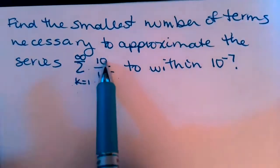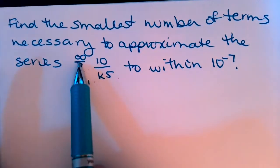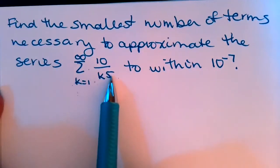So in this case, my infinite series is 10 over k to the 5 from k=1 to infinity, and I want to be within 10 to the negative 7 of the actual infinite sum.